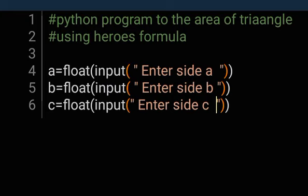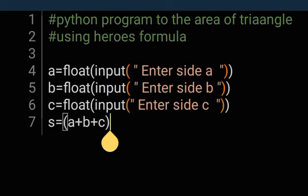In Heron's formula, the three sides must be known before you apply the expression. S equals open brackets A plus B plus C divided by 2.